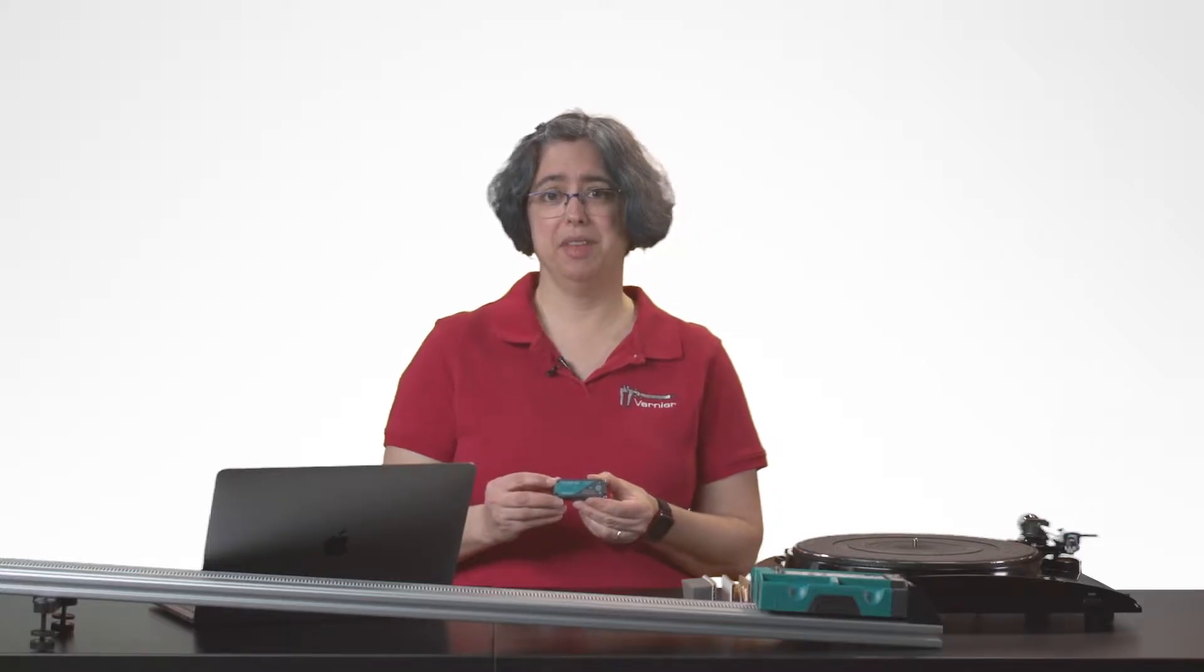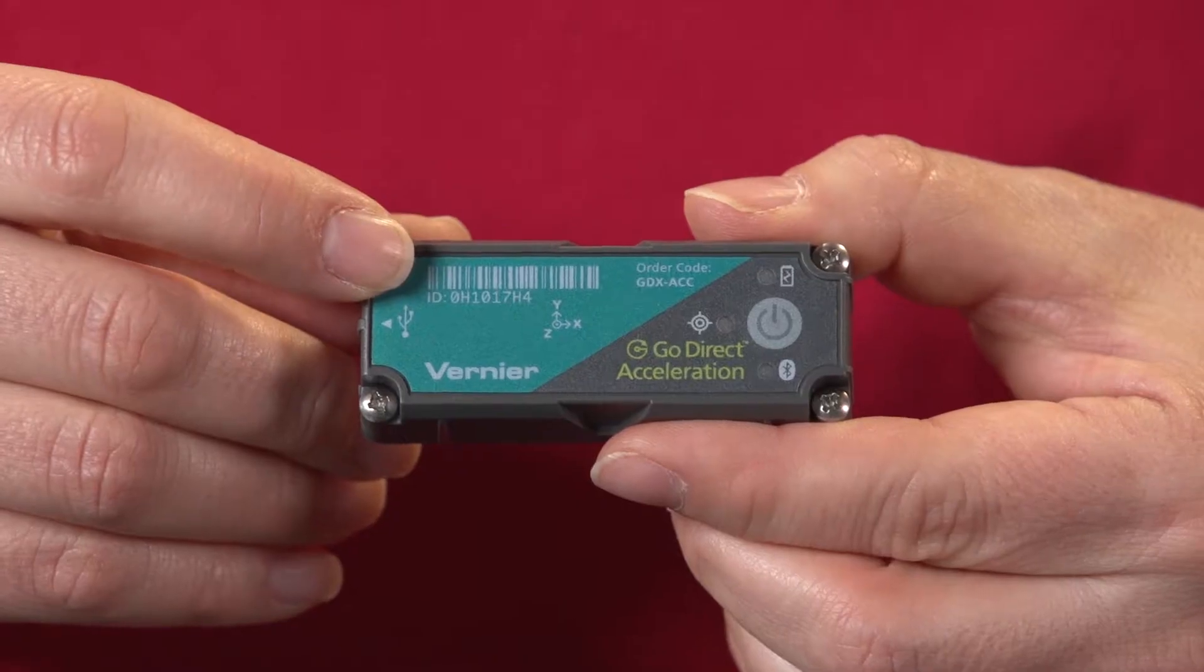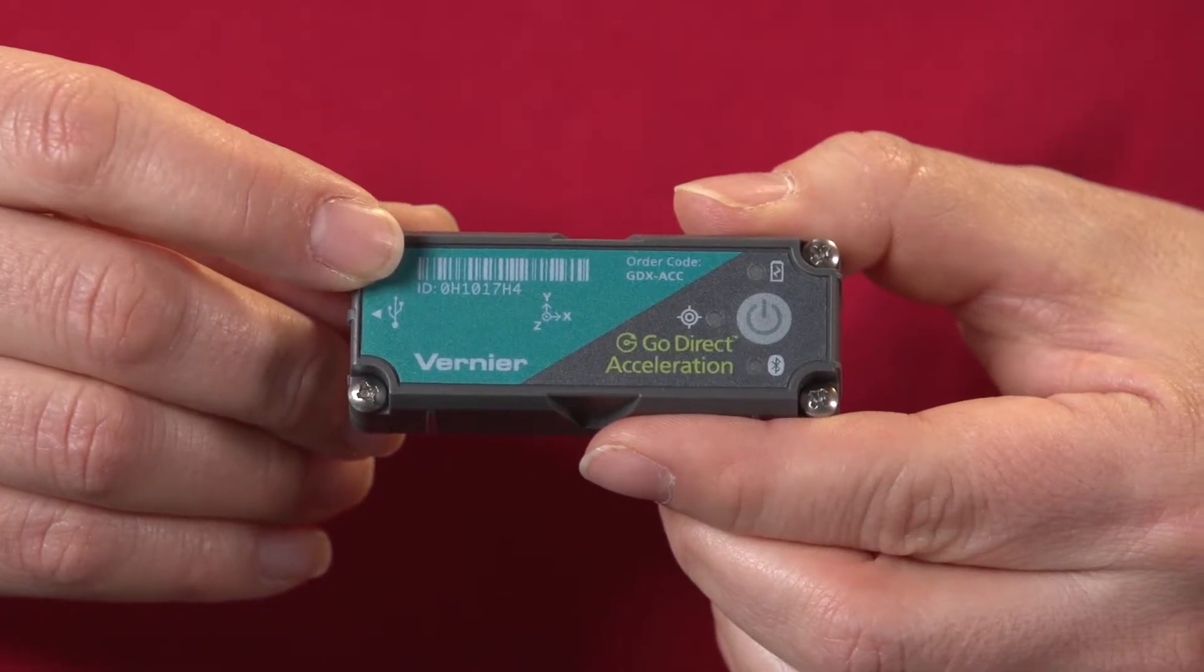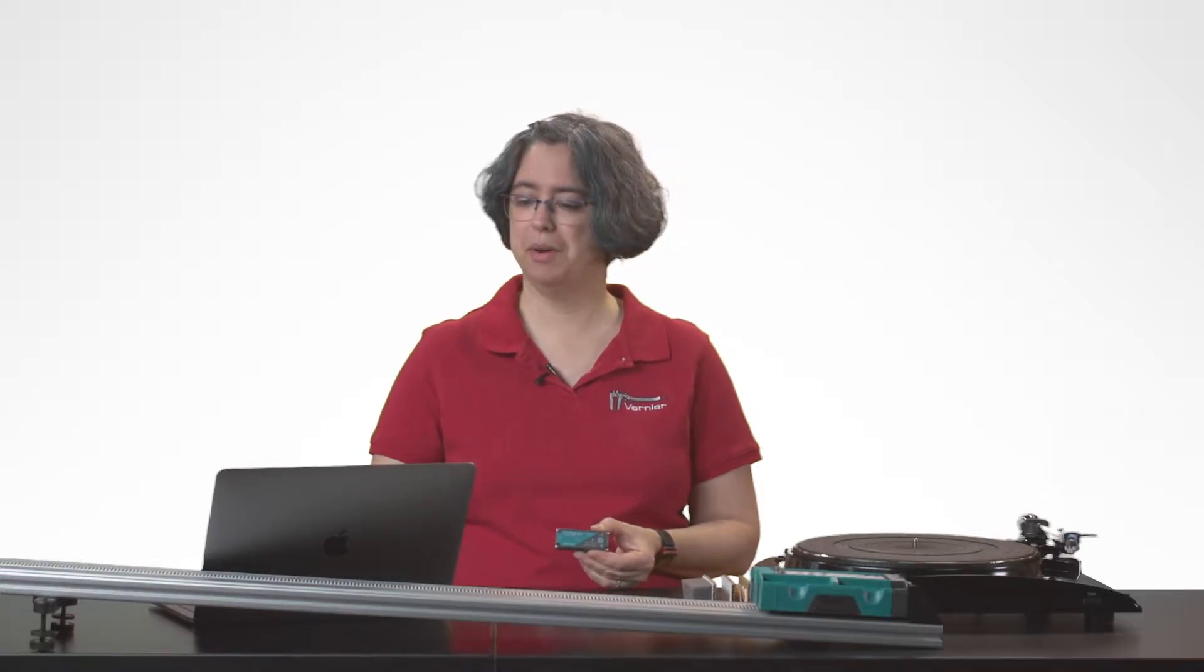Using the ID number that's on the sensor, I'm going to look for that ID number in the list of sensors. I know that this one ends in 7H4, so I'm going to look for the device that has 7H4 at the end of it. Once I've found it, I can connect.